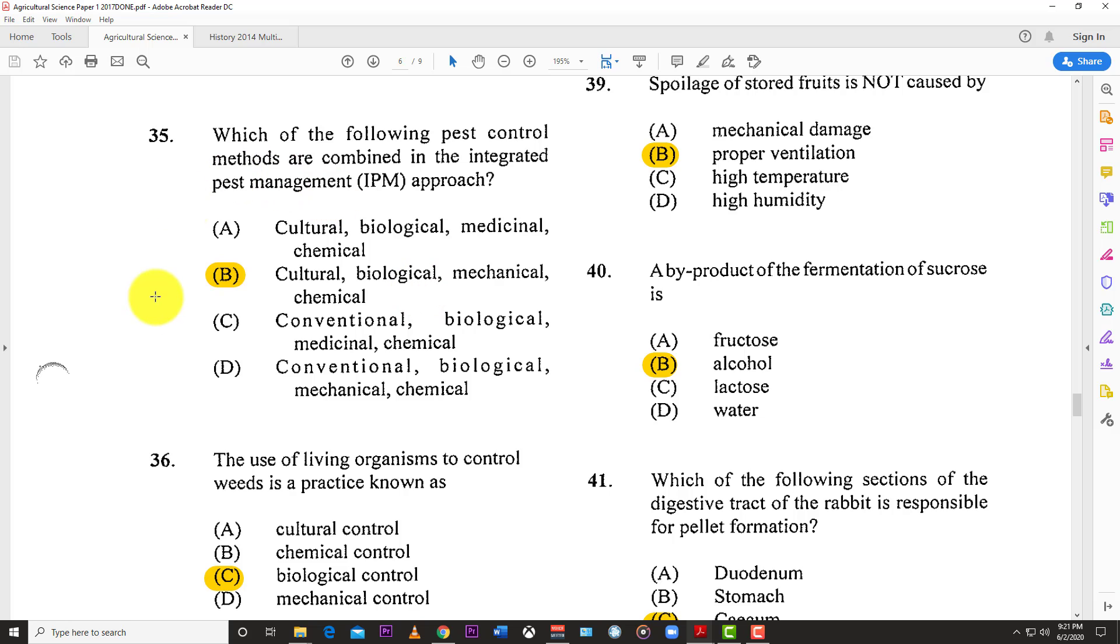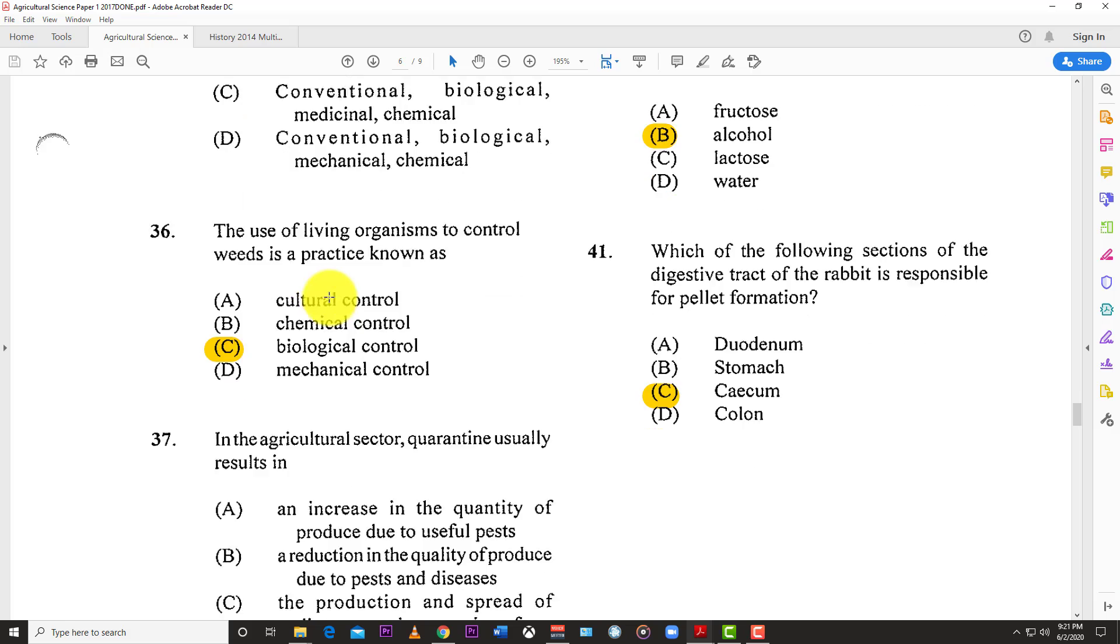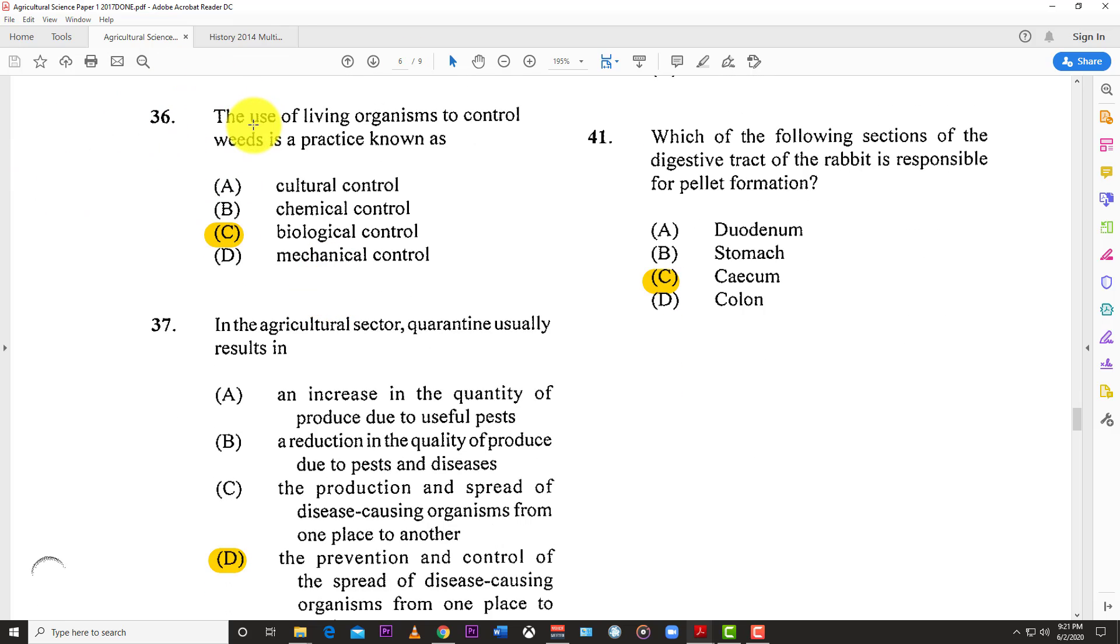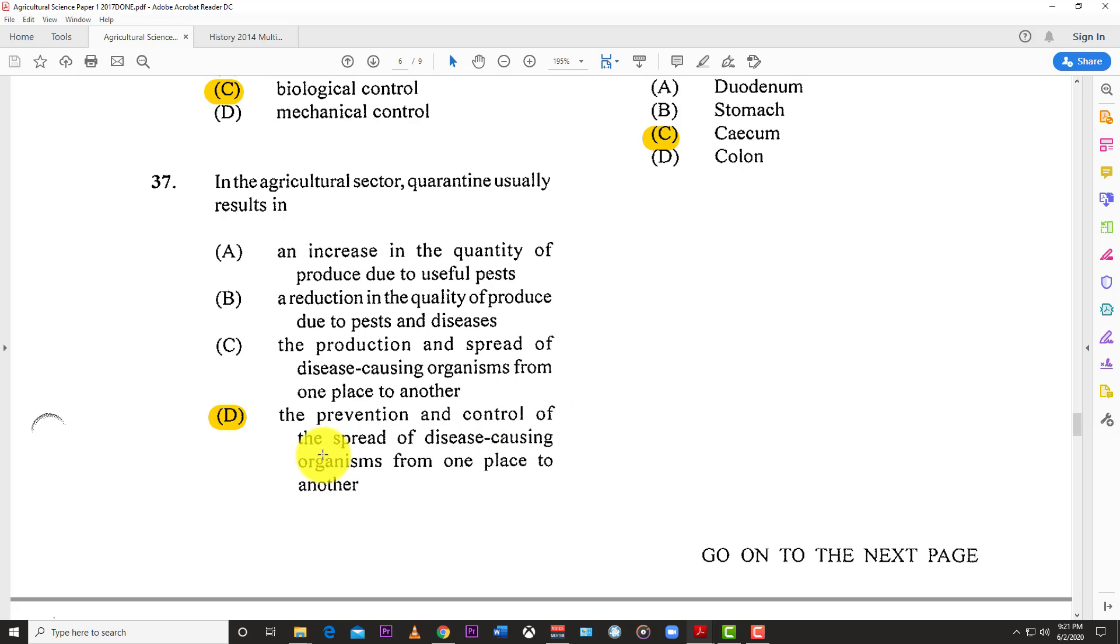Number thirty-five: Which pest control methods are combined in the integrated pest management IPM approach? The answer is B, cultural, biological, mechanical, and chemical. All those are different types of pest controls. Number thirty-six: The use of living organisms to control weeds is a practice known as C, biological control.